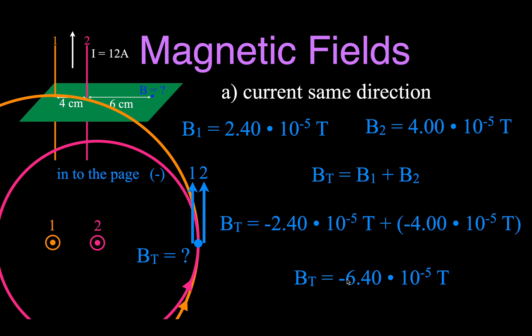That negative sign doesn't mean this number is less than zero. The negative sign means it's flowing in a negative direction — the magnetic field is a vector quantity with a magnitude and a direction. You could write 6.40×10⁻⁵ teslas into the page, which is the same thing. So that's the magnetic field strength at that point from those two wires when the currents flow in the same direction — we superimpose them, add them up, and get that value.